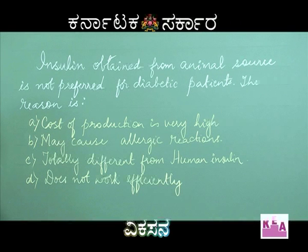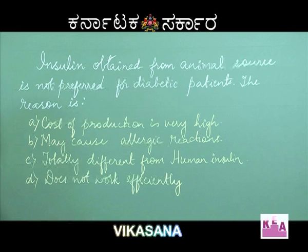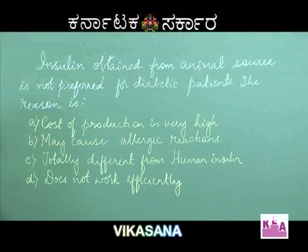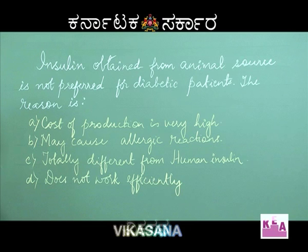The next question: Insulin obtained from animal source is not preferred for diabetic patients. The reason is — option A, cost of production is very high; option B, may cause allergic reactions; option C, totally different from human insulin; option D, does not work efficiently. Insulin is a hormone synthesized in the body of all mammals. It helps broken-down sugars to be absorbed by the cells and efficiently used for releasing energy.